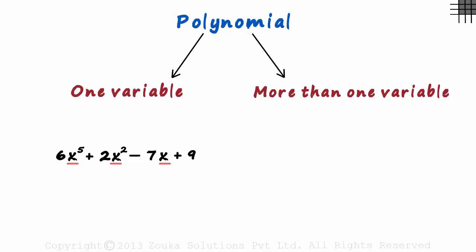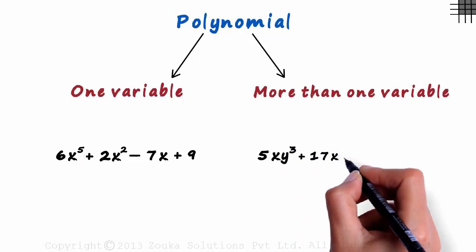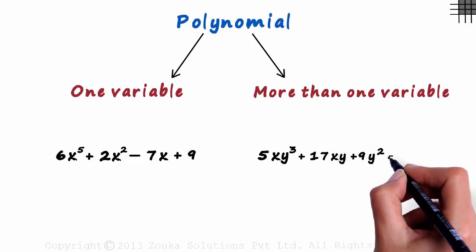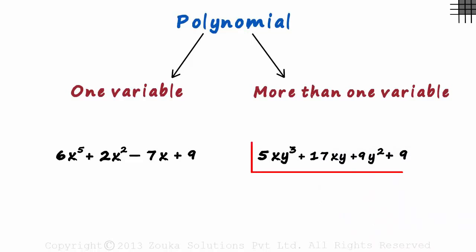An example of the second type would be 5xy cubed plus 17xy plus 9y squared plus 9. This has two variables x and y which makes it fall into the second category.